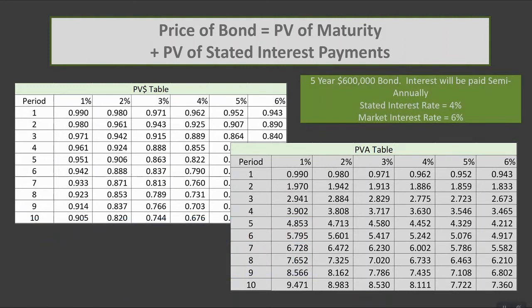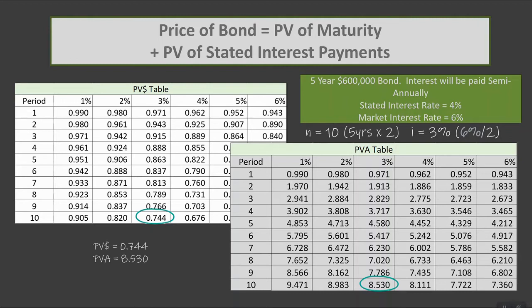Looking at our example, we have a four percent stated rate and a six percent market rate. When determining the present value of the bonds, we always use the market interest rate, which is what drives the difference in price relative to the stated rate. Looking at present value tables, we need to know N, our period of time, and I, the relative interest rate. Because these bonds are semi-annual, paid out twice a year, N is not five years but five times two — ten. Our interest rate will be three percent, the six percent divided by two to represent a six-month period. This gives us a present value of a dollar factor of 0.7744 and a present value of an annuity factor of 8.530.